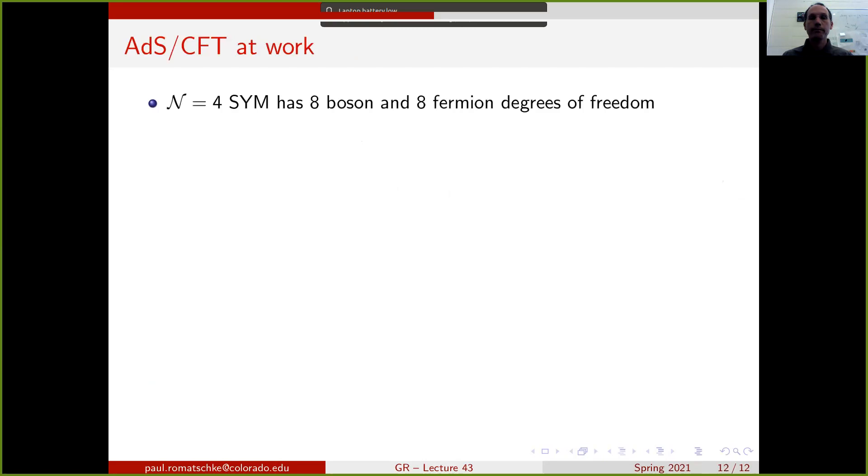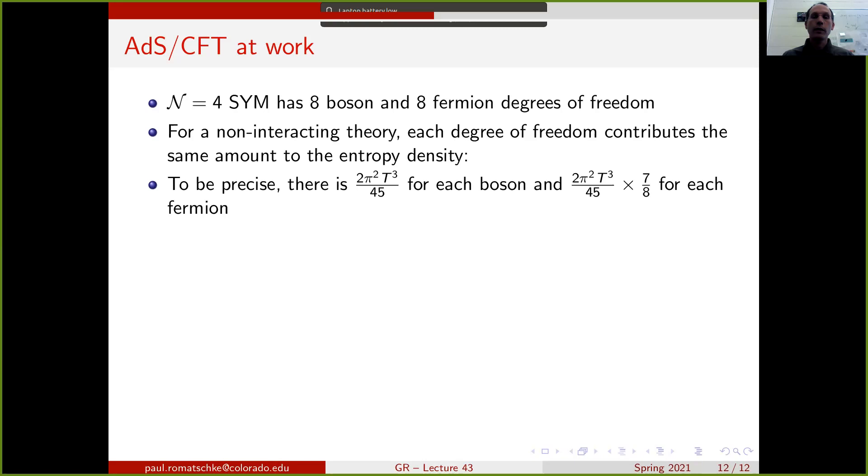We can compare this to the entropy density of N=4 super Yang-Mills that we can access by the weak coupling standard quantum field theory treatment. N=4 super Yang-Mills has 8 boson and 8 fermion degrees of freedom. For non-interacting theory, each of these degrees of freedom contributes the same amount to the entropy density. So it happens that there is a factor of 2π²T³/45 for each boson, and a similar amount times 7/8 for each fermion. If we do the math, we find that for N=4 super Yang-Mills, the entropy density is given by this quantity here. That's just 2π²T³/3.